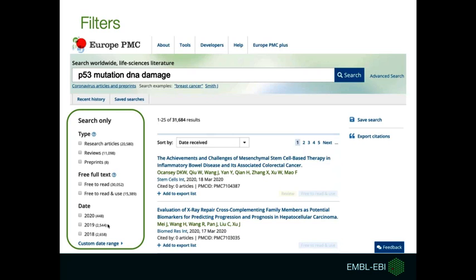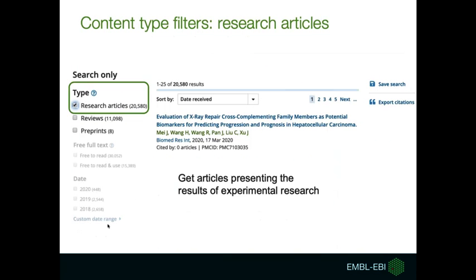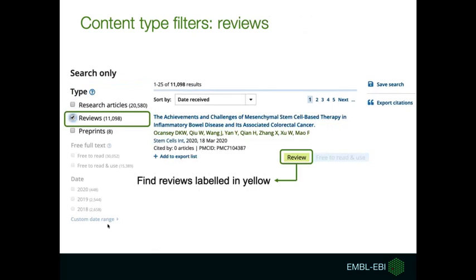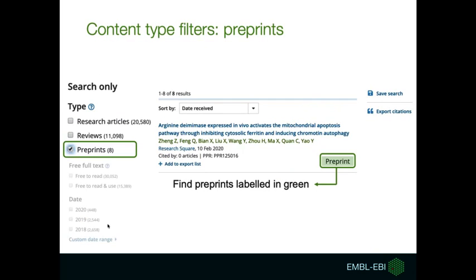Another way to manage your search results is to use the filters on the left-hand side of the screen. These allow you to restrict your search results to a particular subset. The first option is the content type filter, from which you can select only research articles — showing articles presenting the results of experimental research. You can also filter the search to get only reviews, which come with a yellow label on the right-hand side of the search result list. In the same way, you can filter your search to get preprints only, which will be labeled in green on the right-hand side of your search result list.